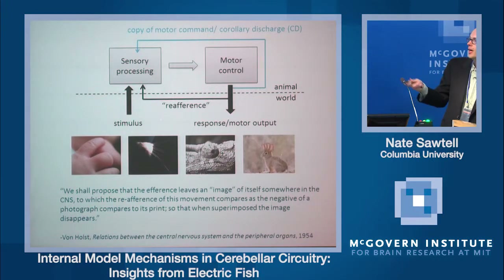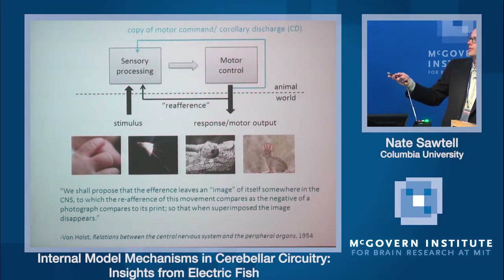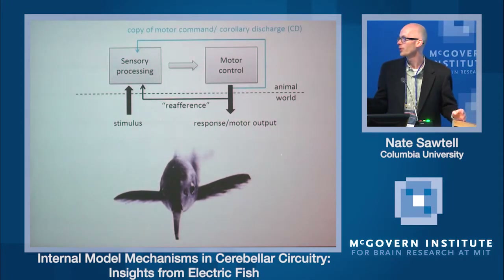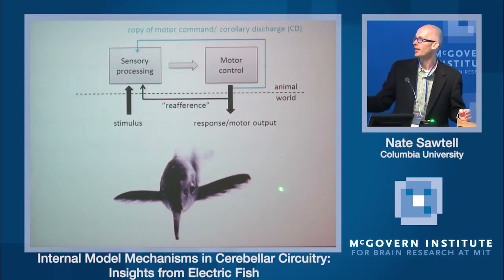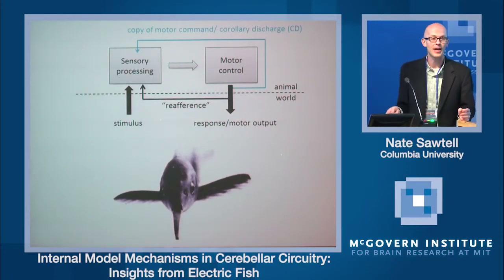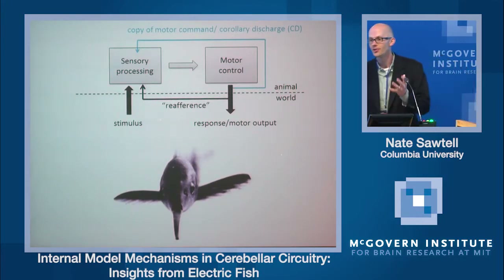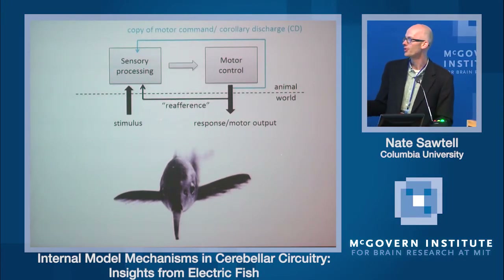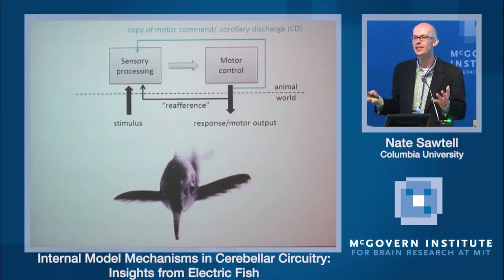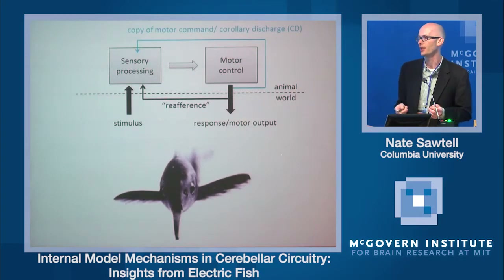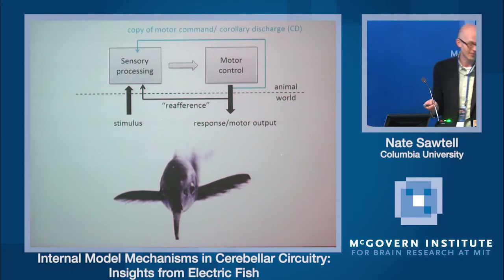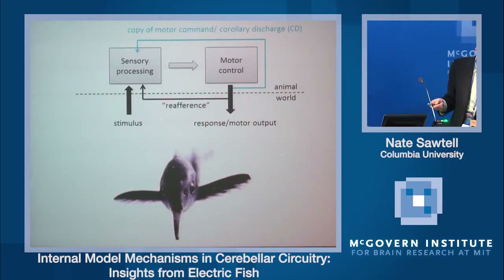A really good place to study this kind of model is this unusual creature that is a focus of research in my lab — a weakly electric fish from Africa. For the rest of the talk, we'll dive into the unusual sensory-motor systems of this fish, and I'll try to give you a detailed mechanistic picture of how a simple internal model is generated in the brain of this creature.